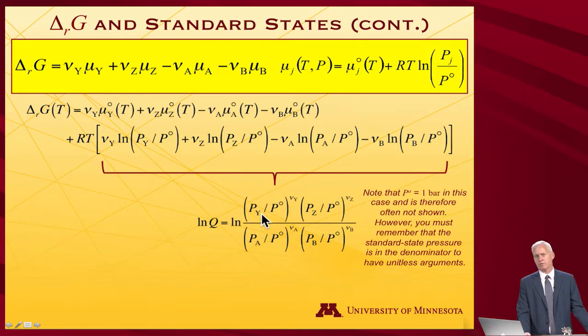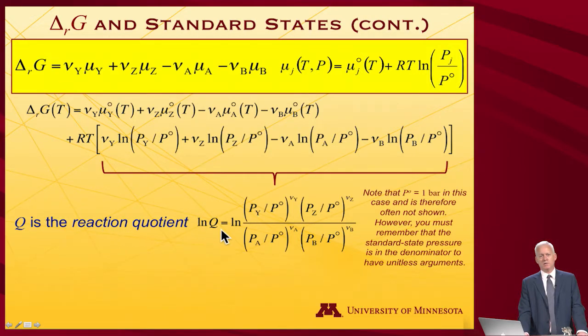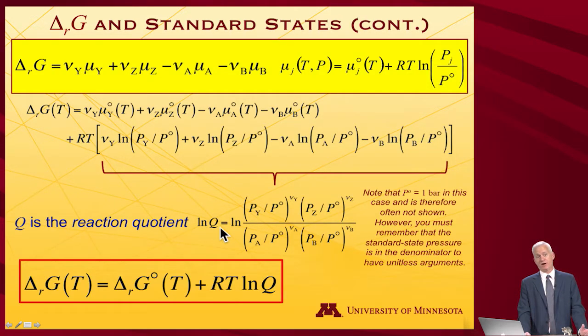Included in this expression is the P superscript zero, the standard state pressure of one bar. Often when you see people write this reaction quotient, they don't include the standard state piece because it's equal to one. But the reason it's really there is you need to cancel the units so you can't evaluate the log of something with units.